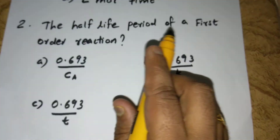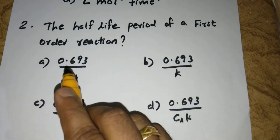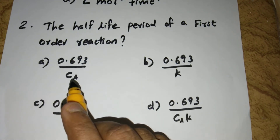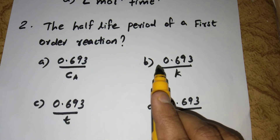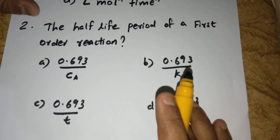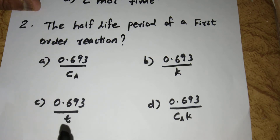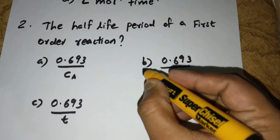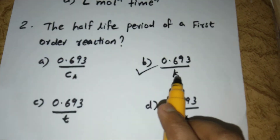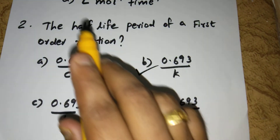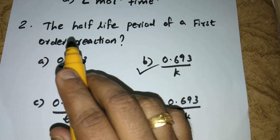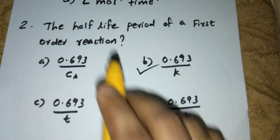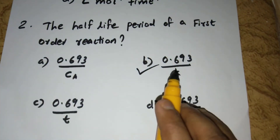The half-life period of a first order reaction: Option A: T½ = 0.693/Ca (concentration). Option B: 0.693/k (rate constant). Option C: 0.693/T (time). Option D: 0.693/(Ca·k). The right answer is B — 0.693 divided by k. Note that radioactive decay is a first order reaction and its half-life period follows this 0.693/k equation.